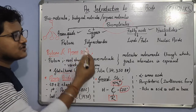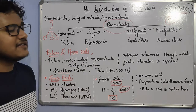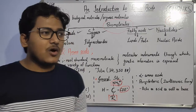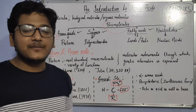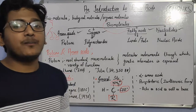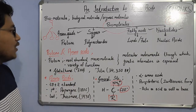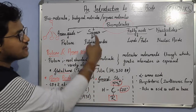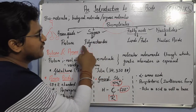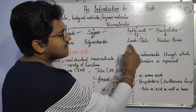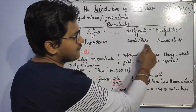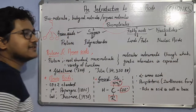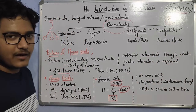Amino acids, sugars, fatty acids, and nucleotides are not present as such — they are present in the form of multimeric units or polymers. Amino acids are present in the form of proteins, whereas sugars are present as polysaccharides, fatty acids in the form of lipids and fats, and nucleotides are present as nucleic acids inside the living organism.